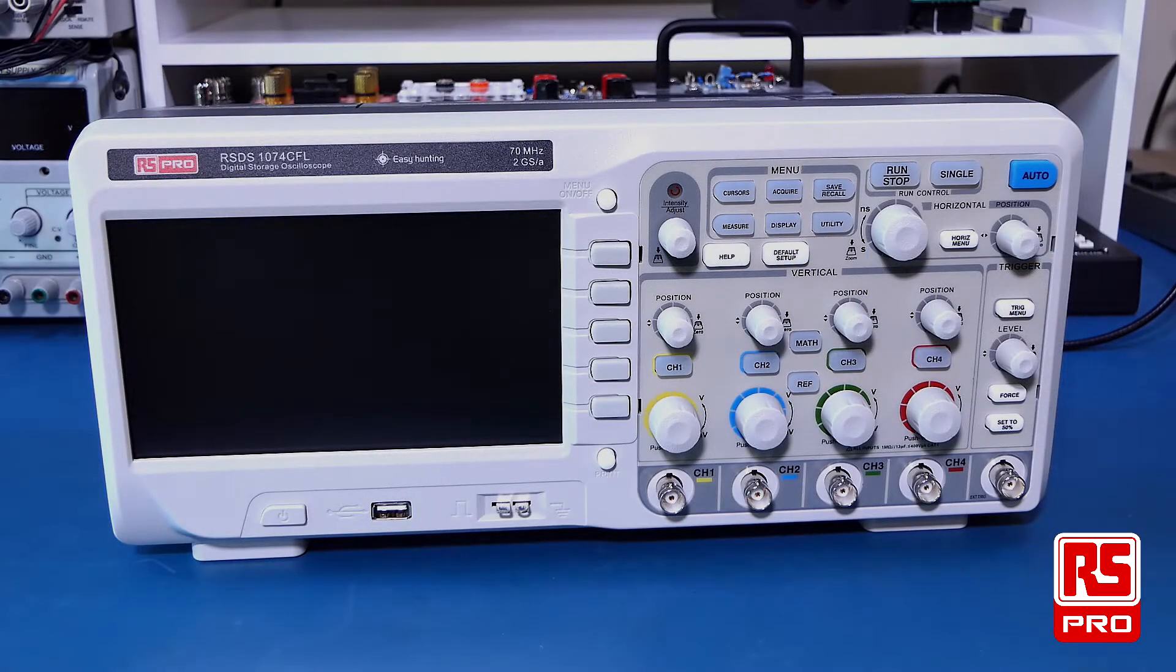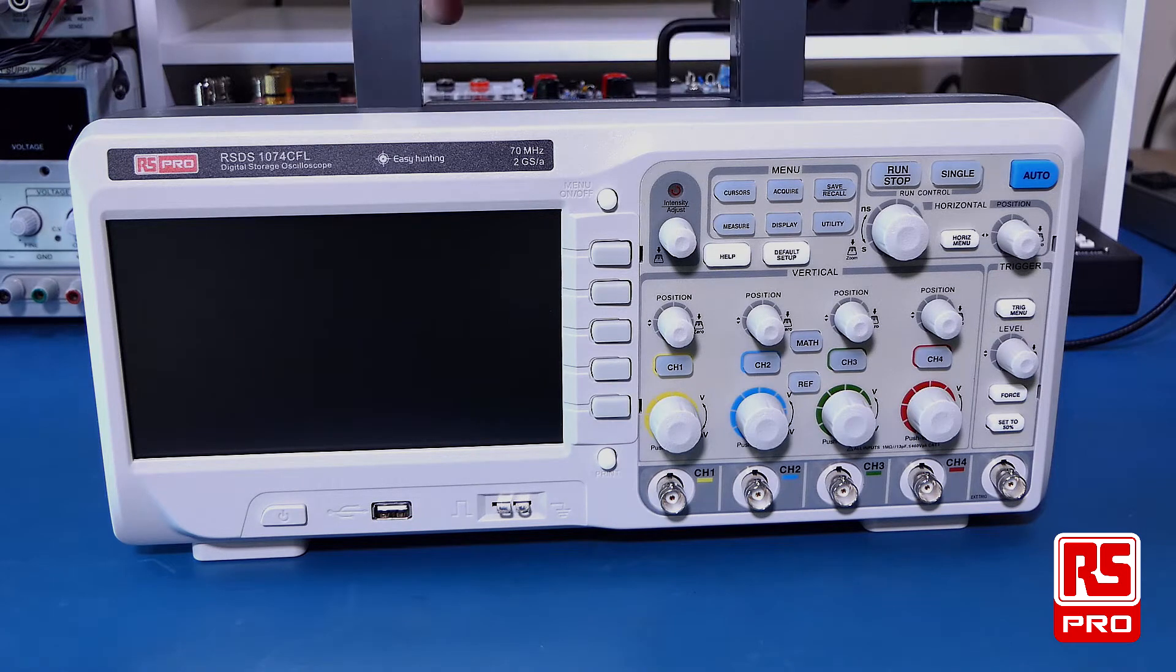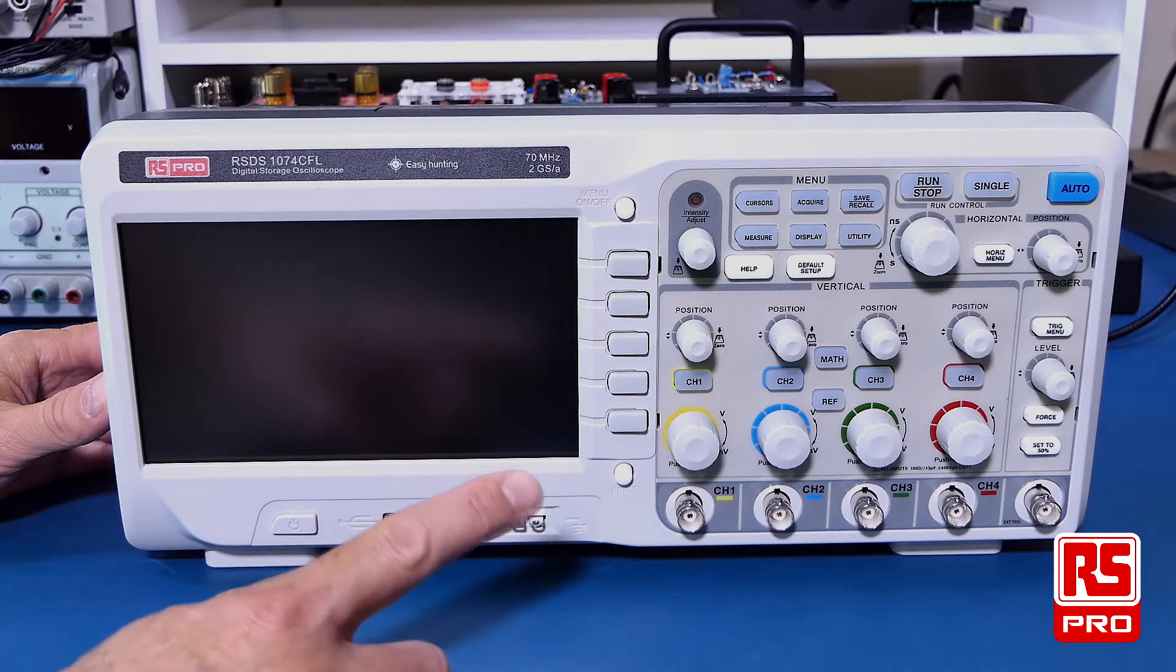The RS-PRO RSDS-1000 series oscilloscopes come in a nice lightweight package with a carry handle that makes it convenient for carrying or moving to another location. It has a large 7-inch color TFT display.